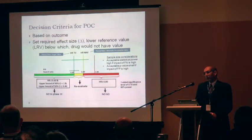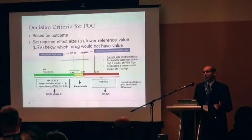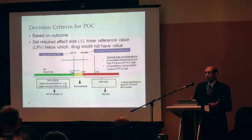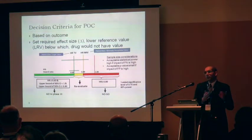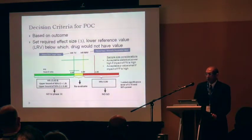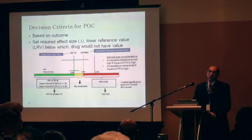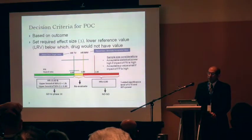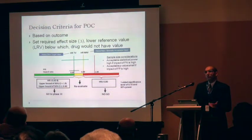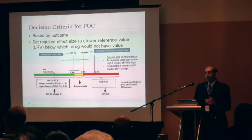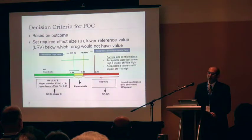An important point we spend a lot of time on in our group is the decision criteria for POC. If you don't have a clear decision criteria agreed upon by everybody, that's what leads to problems later. What we do is, before we even get the study approved, we have negotiations with the late-stage group, even commercial and marketing, to come up with POC criteria agreeable to everybody — meaning if we achieve this criteria, we commit to going forward into phase three.